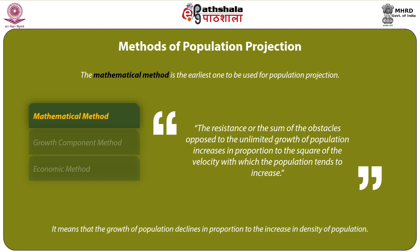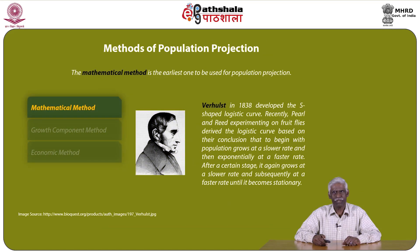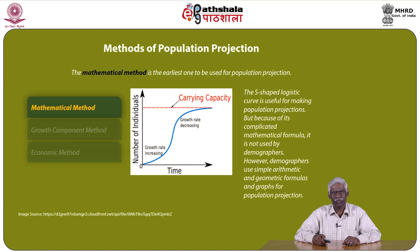The growth of population declines in proportion to the increase in the density of population. In 1838, Verhulst developed the S-shaped logistic curve. Recently, Pearl and Reed, experimenting on fruit flies, derived the logistic curve based on their conclusion that population initially grows at a slower rate, then exponentially at a faster rate, then slows again, and subsequently becomes stationary. The S-shaped logistic curve is useful for making projections, but due to its complicated mathematical formula, it is not adequately used by demographers, who prefer simple arithmetic and geometric formulas and graphs.